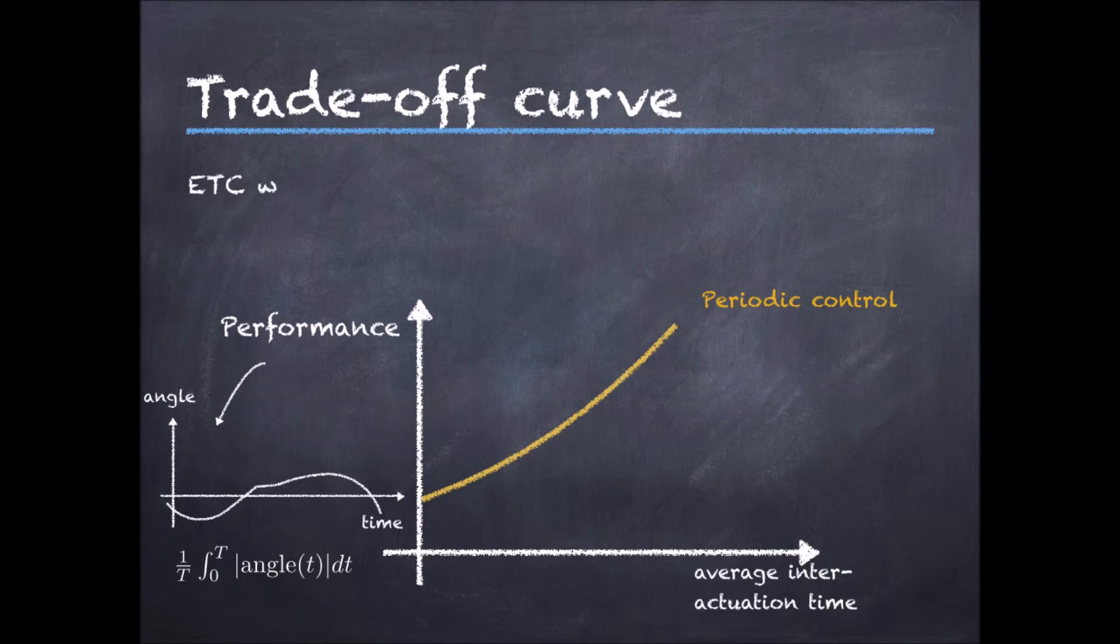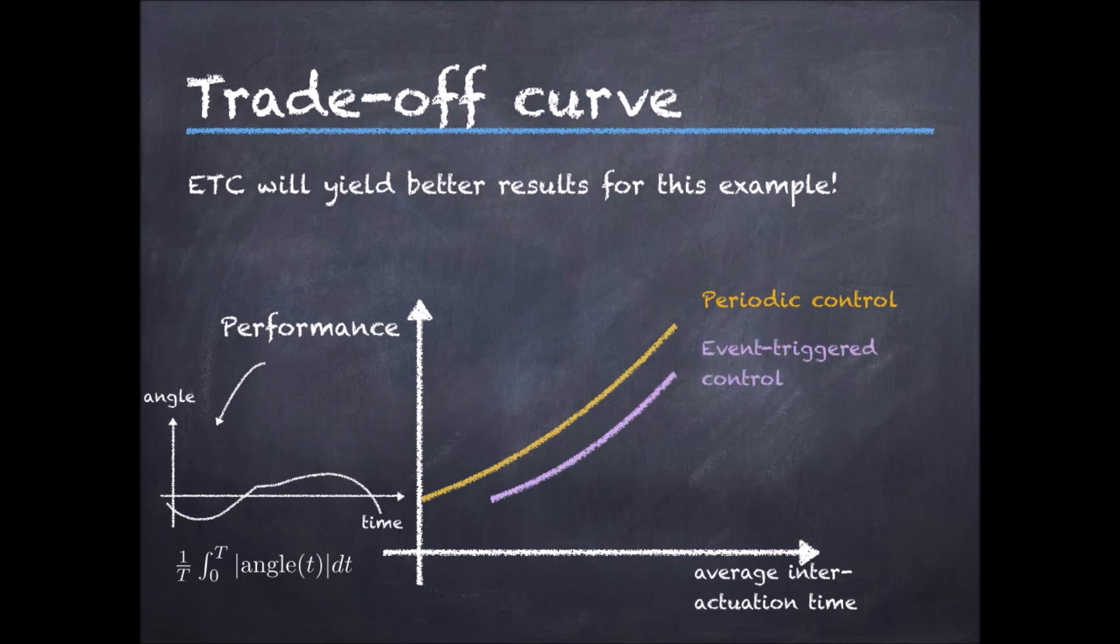And if we plot the same curve for event-triggered control by changing some of its parameters, say, the parameter D, we expect better results. In particular, we expect this curve to be below the curve of periodic control. This means that for the same average interaction time, we would expect a better performance for event-triggered control.